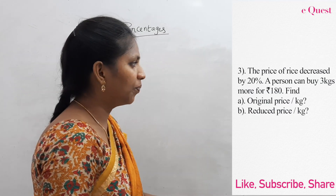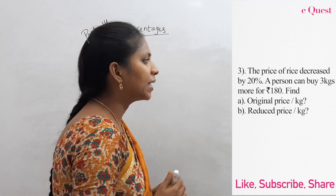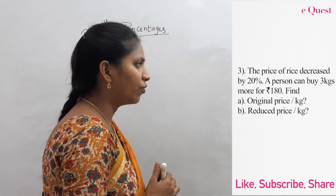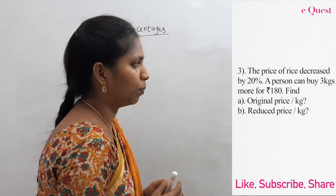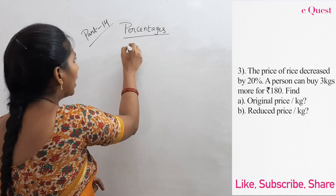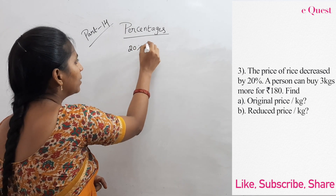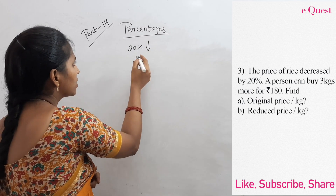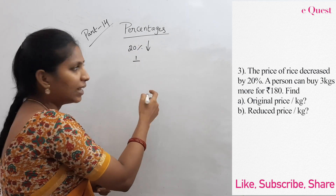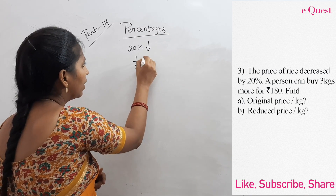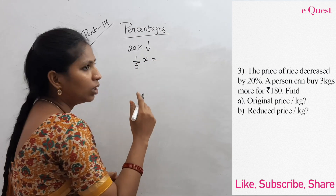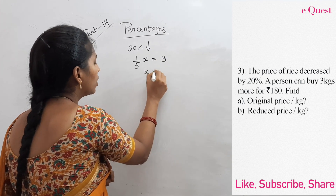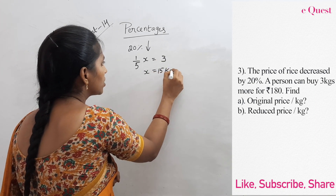Now the third question. The price of rice decreased by 20%. A person can buy 3 kgs more for 180 rupees. 20 percent in the form of a fraction is 20 by 100, which is 1 by 5. So 1 by 5 times x equals 3 kgs more, giving x equal to 15 kgs after reduction of the price of rice.